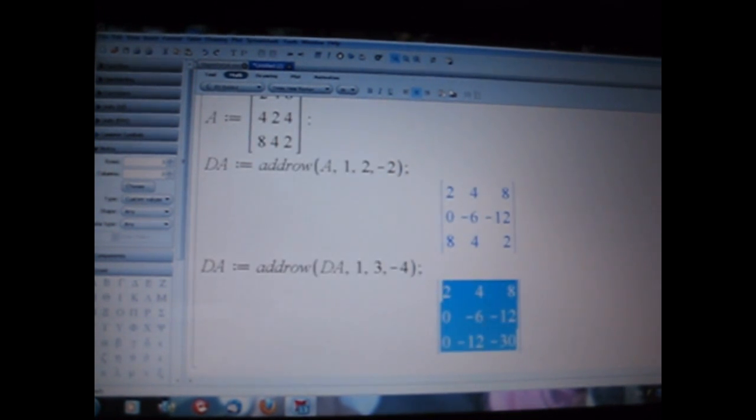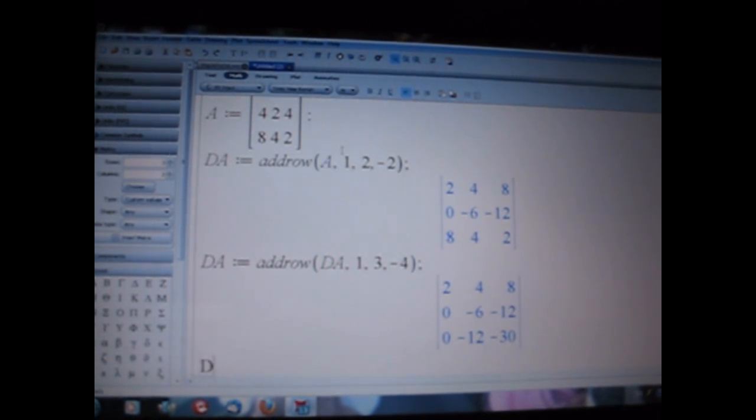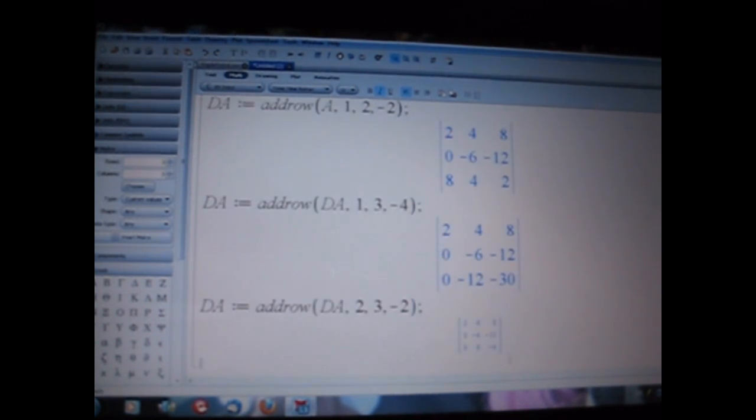Okay, here we go, we have two zeros. And now we just need to solve for the bottom negative twelve there, turn that into zero. So we are going to do one last time here: DA equals add row. This time we are going to take column two into column three negative two times. And here you will see we have solved the bottom triangle.